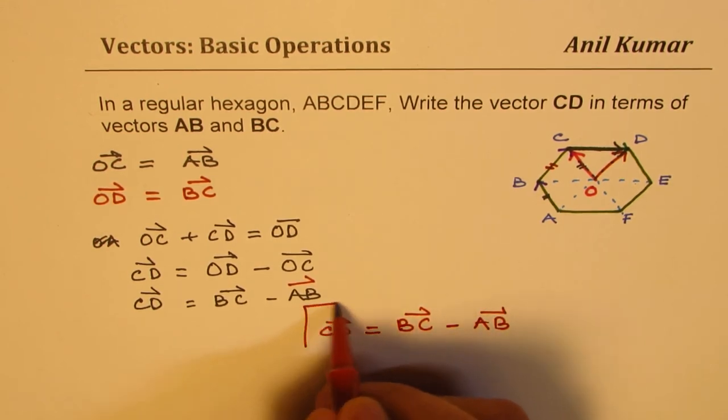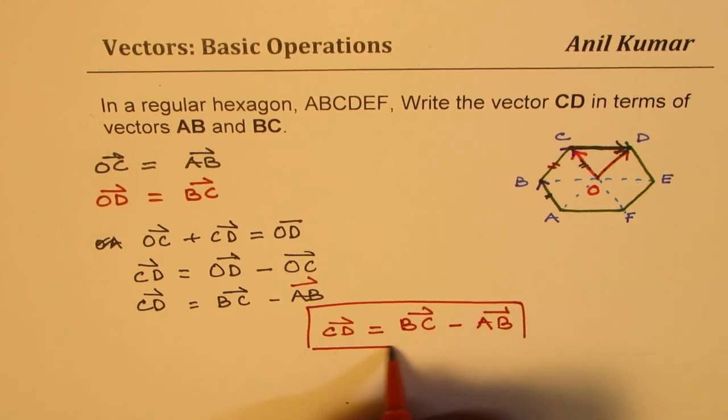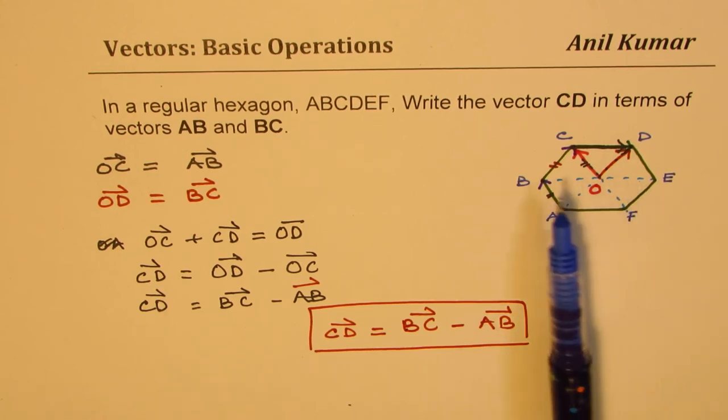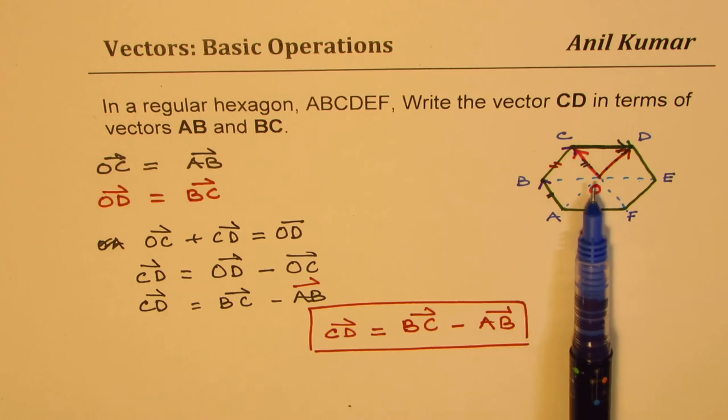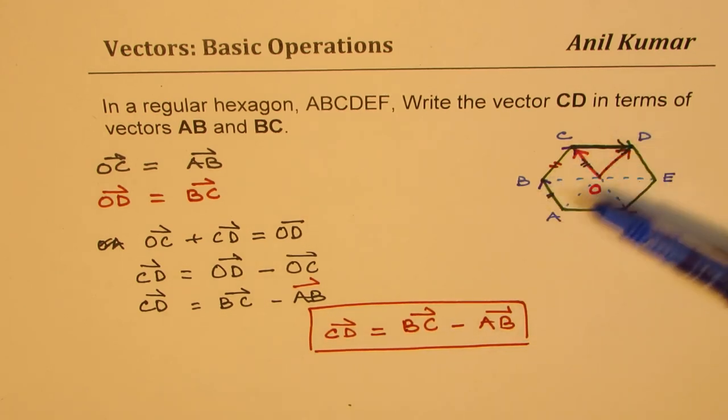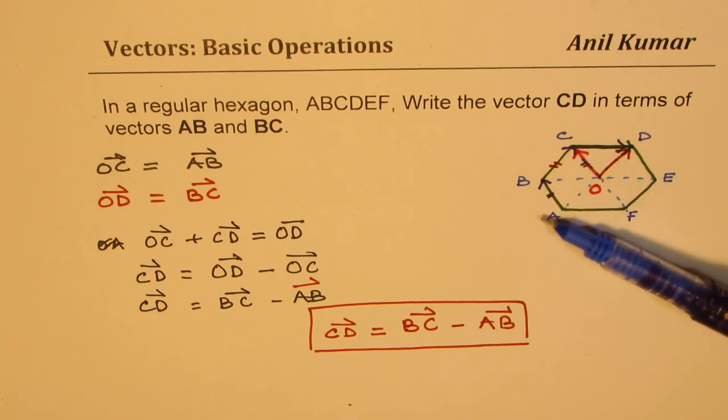By translating the vectors we can easily solve such questions. I hope this concept helps you to solve similar questions. So note this construction which we made here drawing these diagonals. We actually got a diagonal and from that diagonal which was parallel to the opposite side we worked out. So if you use this concept in this hexagon you can find any vector.